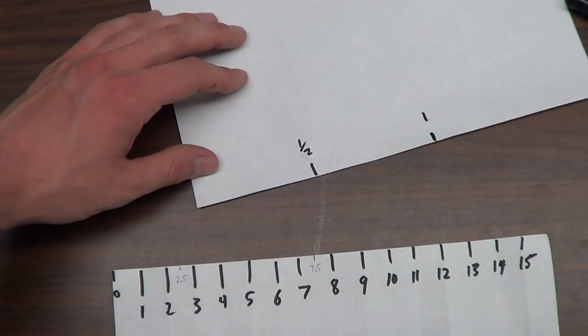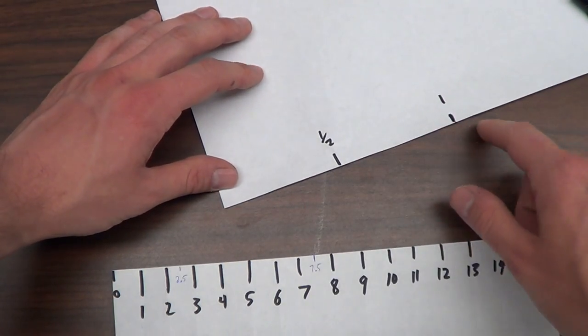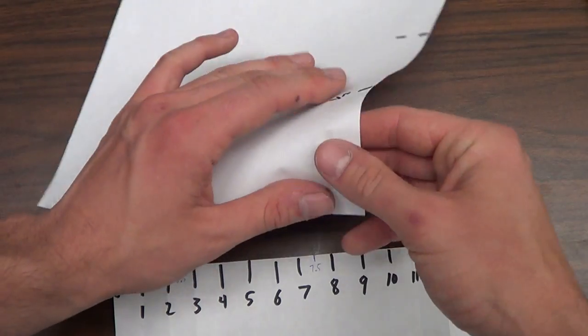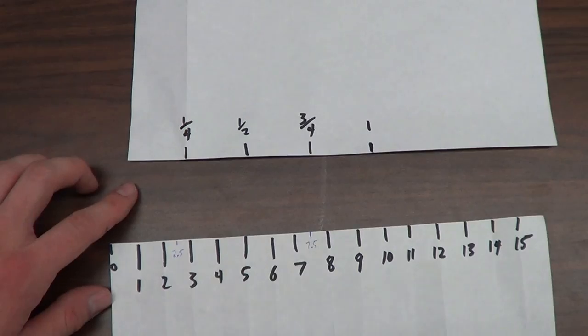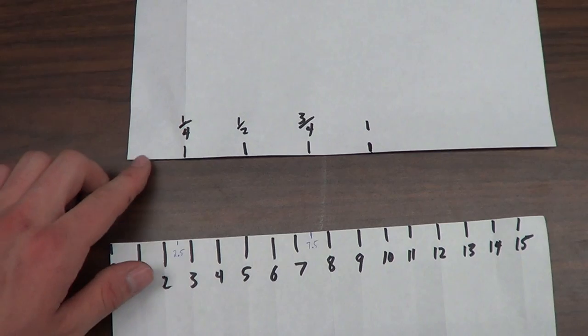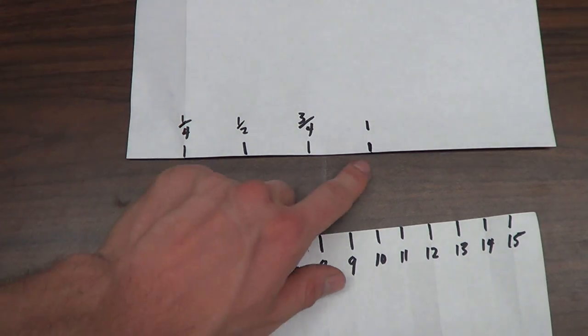Now we're going to take our minor scale here, it goes from zero to half to one. We'll fold it again and get some more marks at a quarter and three quarters. Now I've got a minor scale with zero, quarter, half, three quarters, and one.